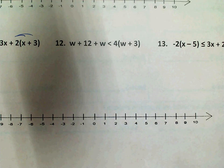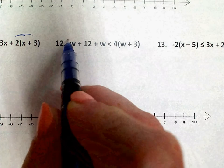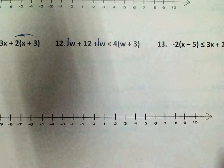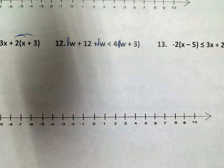When you have letters that don't have a number in front of them, you have an understood one. So I'm going to go ahead and write those ones in front of all of the W's.